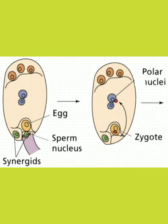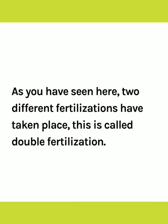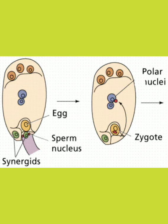As you can see in the figure, one sperm nucleus fuses with the egg cell and forms the zygote, whereas the other sperm nucleus fuses with the two polar nuclei in the center. Thus three nuclei fuse together to produce the endosperm nucleus. As you have seen, two different fertilizations have taken place, so this is called double fertilization — in which one sperm nucleus fused with the egg cell nucleus and the other sperm nucleus fuses with the two polar nuclei together.